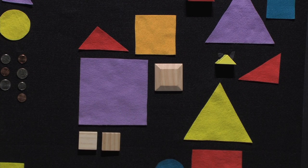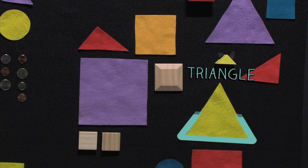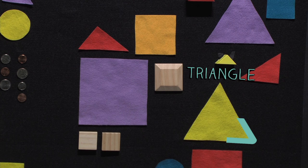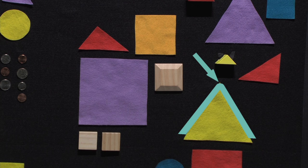Ask your child, can you find any triangles? Triangles have three sides and three corners. When two sides of a shape touch, they form a corner.